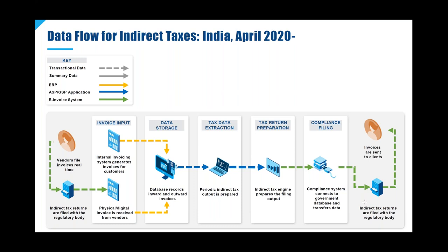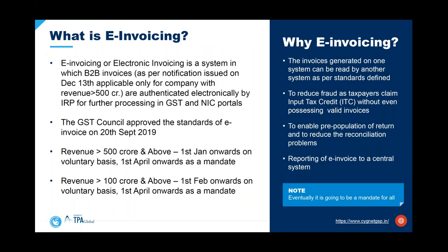What is e-invoicing? E-invoicing applies to companies with a revenue of more than 100 crore, with an earlier mandate for companies with a revenue of more than 500 crore. It involves invoices being submitted to the government body called IRP, then auto-populated into GST returns before being sent to the client. We believe that eventually this will be a mandate for all companies in India regardless of their size.